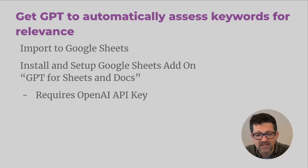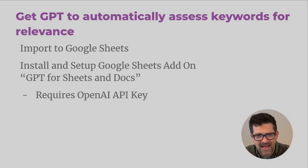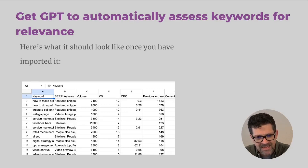Then you're going to install and set up a Google Sheets add-on called GPT for Sheets and Docs. You'll need your OpenAI API key — you can find that at platform.openai.com. Log in, quickly find your API key, and insert it back into the add-on. There's a little walkthrough for the add-on, and it should be fairly easy to get that working. Here's what your sheet should look like once you've pulled it out of Ahrefs. All you really need to worry about is that A column.